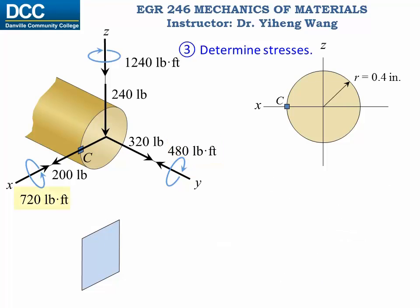Next, for the bending moment about the x-axis, the normal stress distribution is linear and is zero at the x-axis. Since point C is on the x-axis, the stress caused by this bending moment at point C is zero.